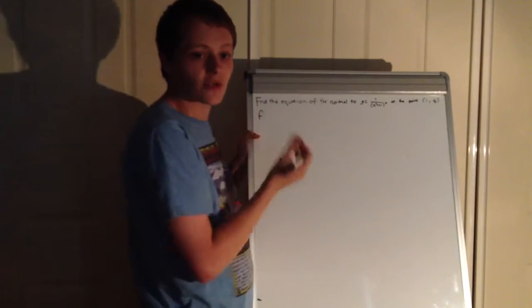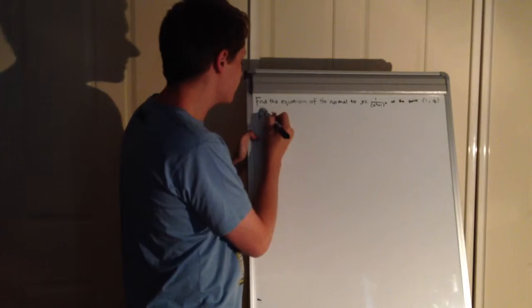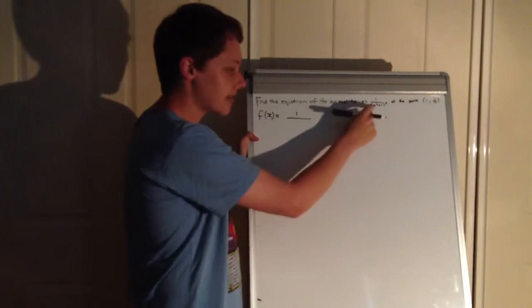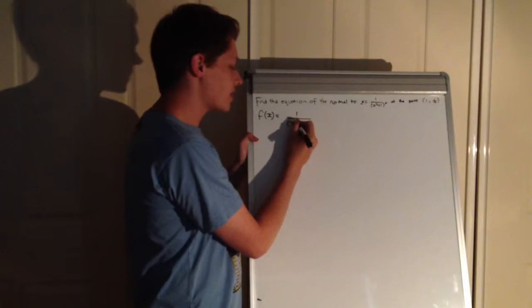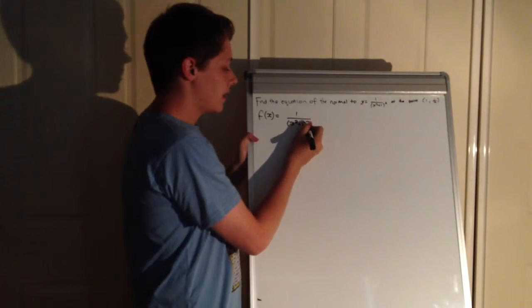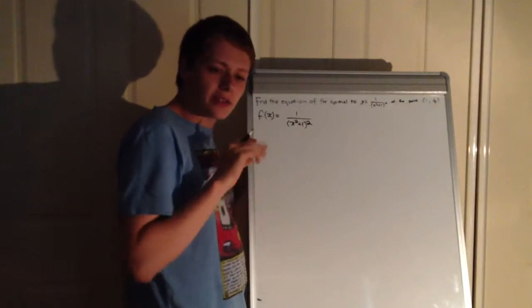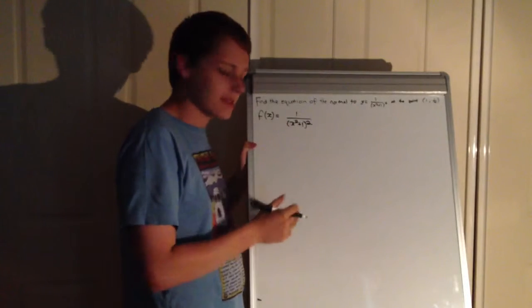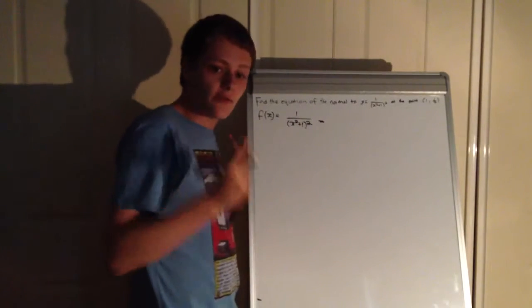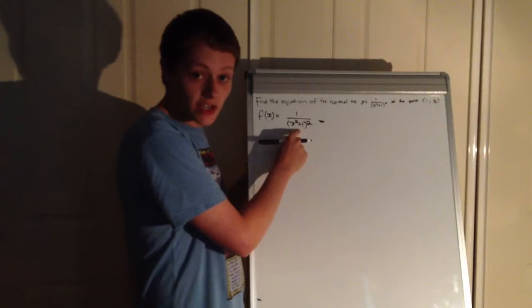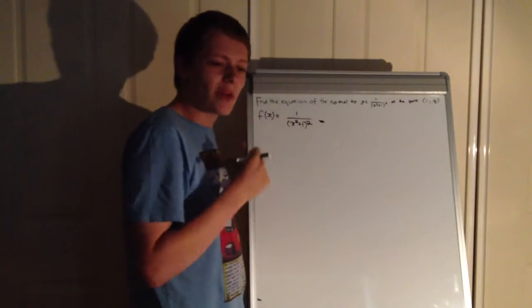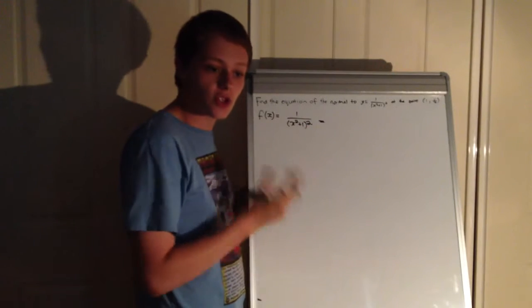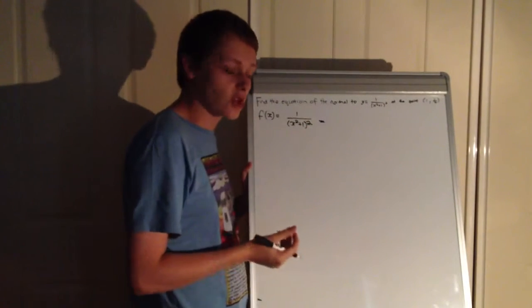So we're going to need to rewrite our f of x if we want to use the chain rule. Our f of x at the moment is 1 over (x² + 1)². Now what we can do is if we want to move our denominator term into the numerator, we need to inverse our exponent in the denominator. In this case it's 2, so it will need to be -2 when we rewrite it.